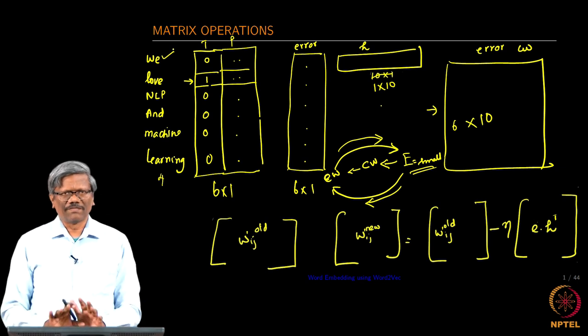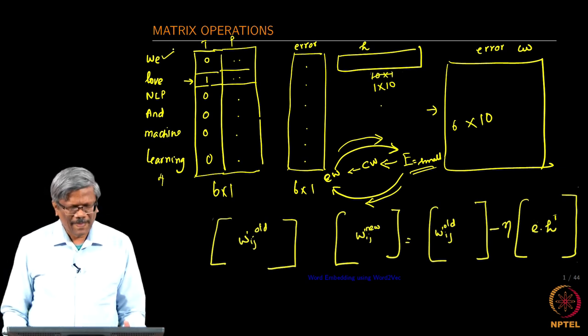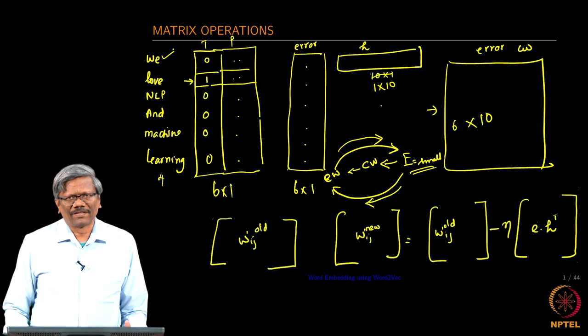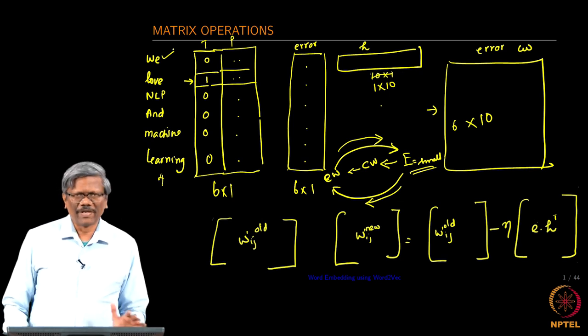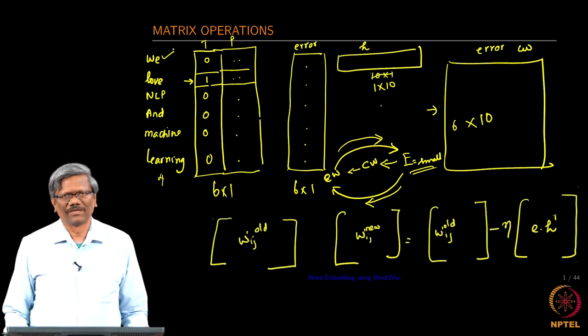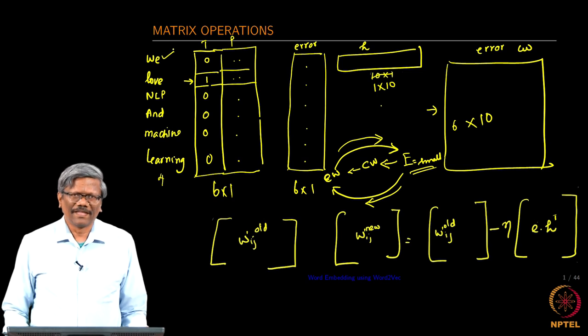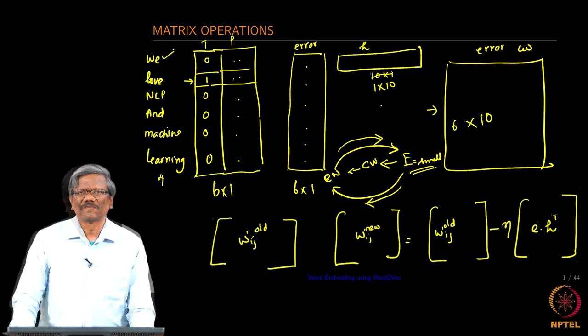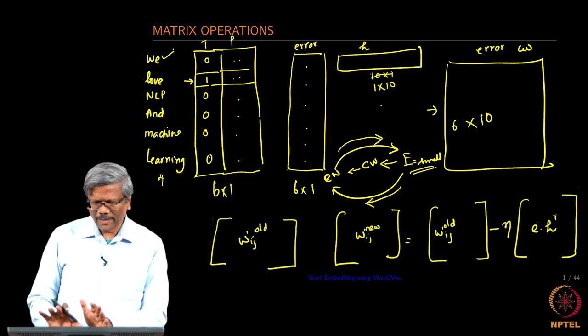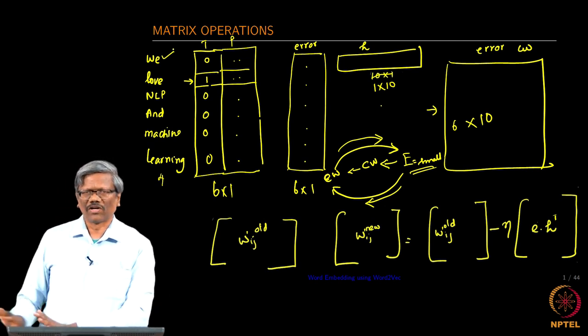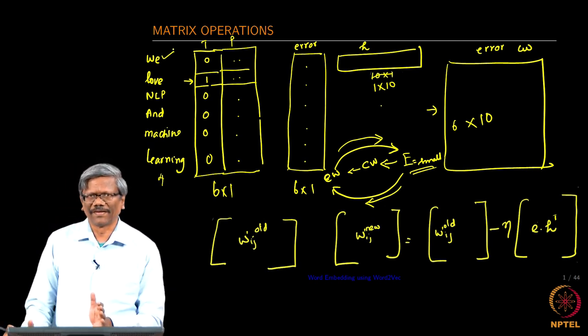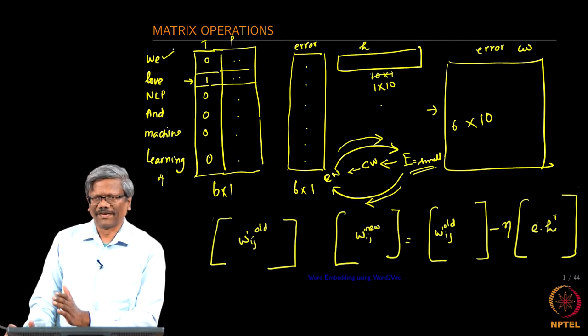This is a very simple architecture that we have chosen to make you understand the concept of creating the embedding vector. Once this operation is completed, we can actually throw away the context layer and the hidden layer.